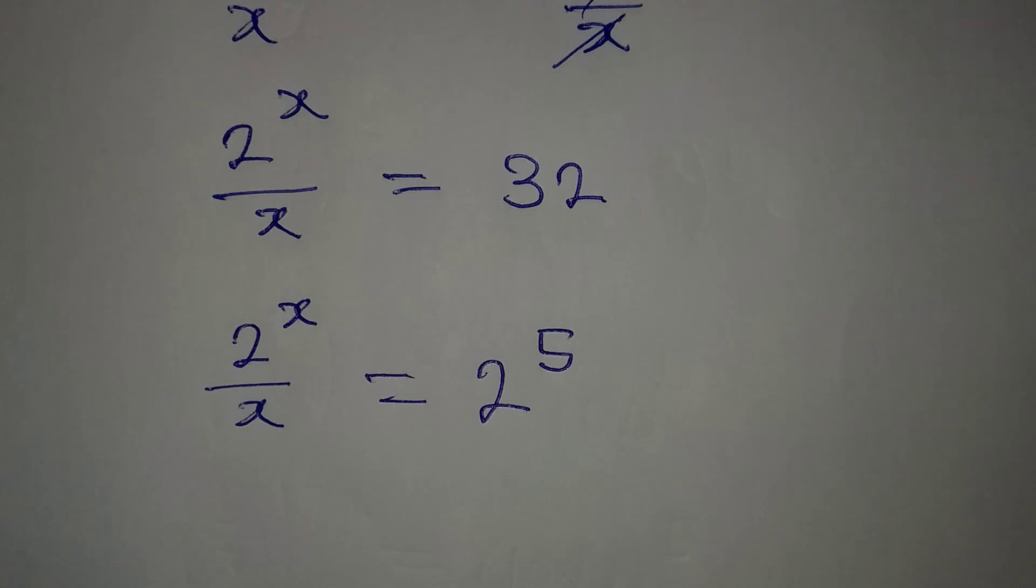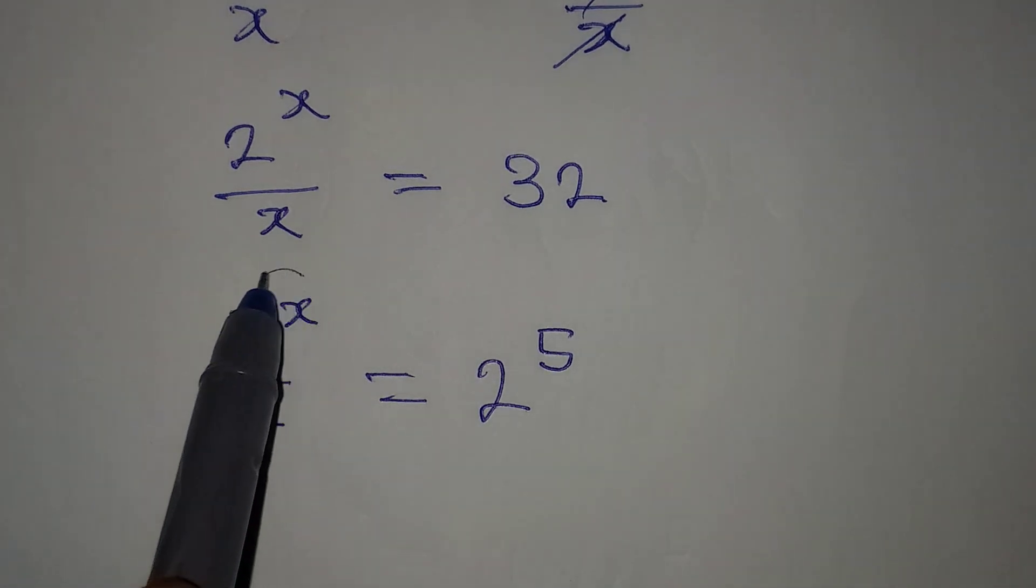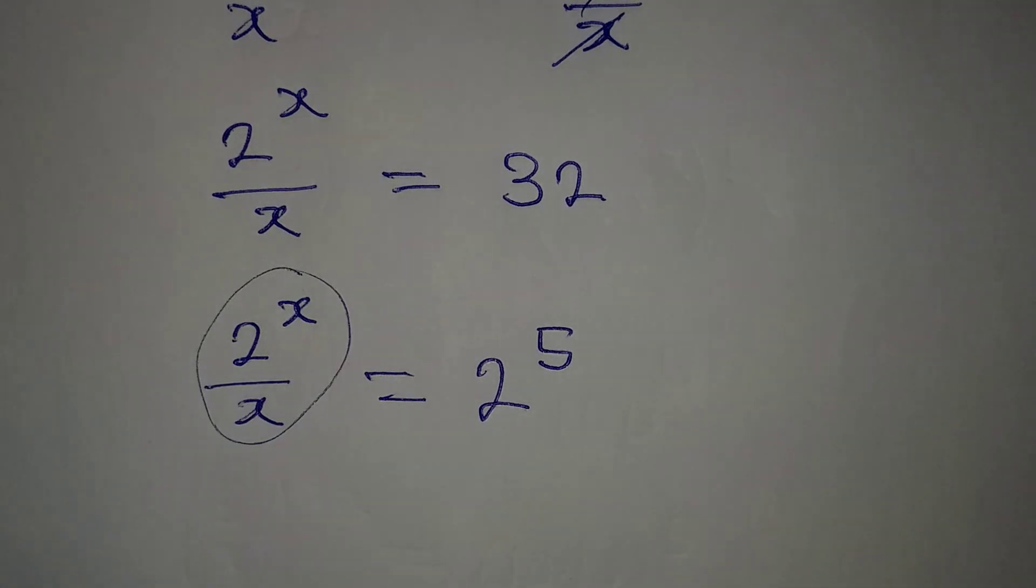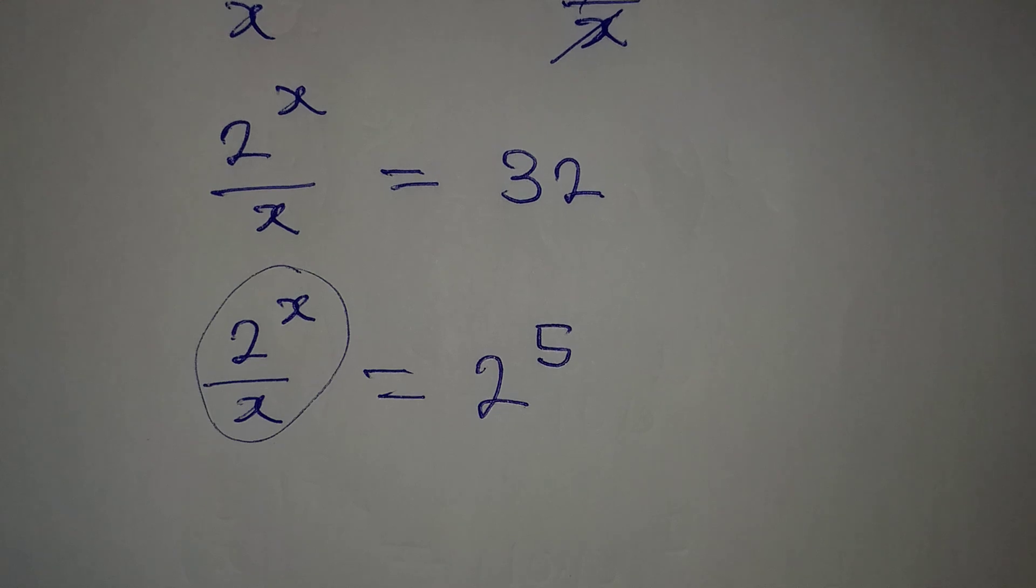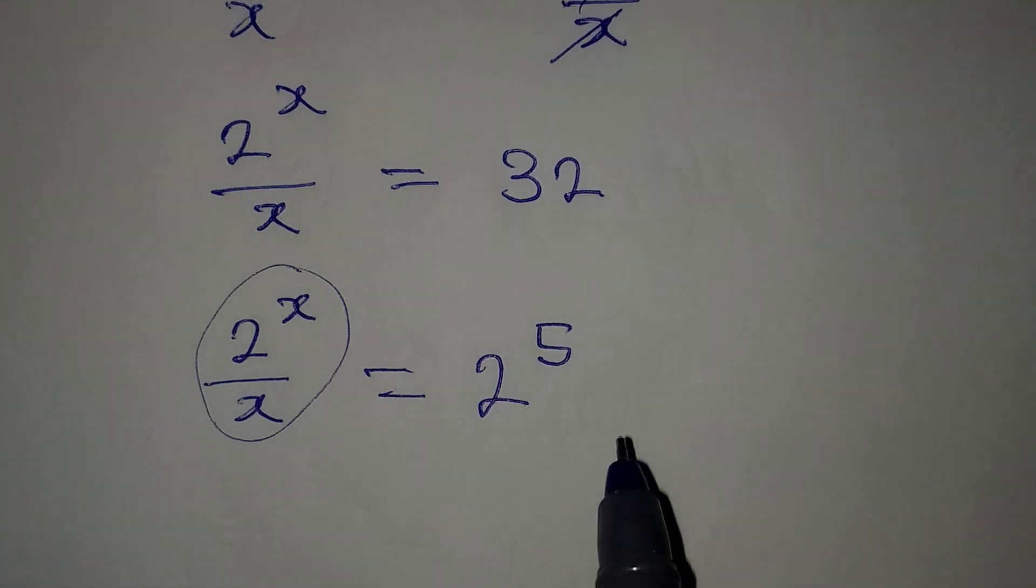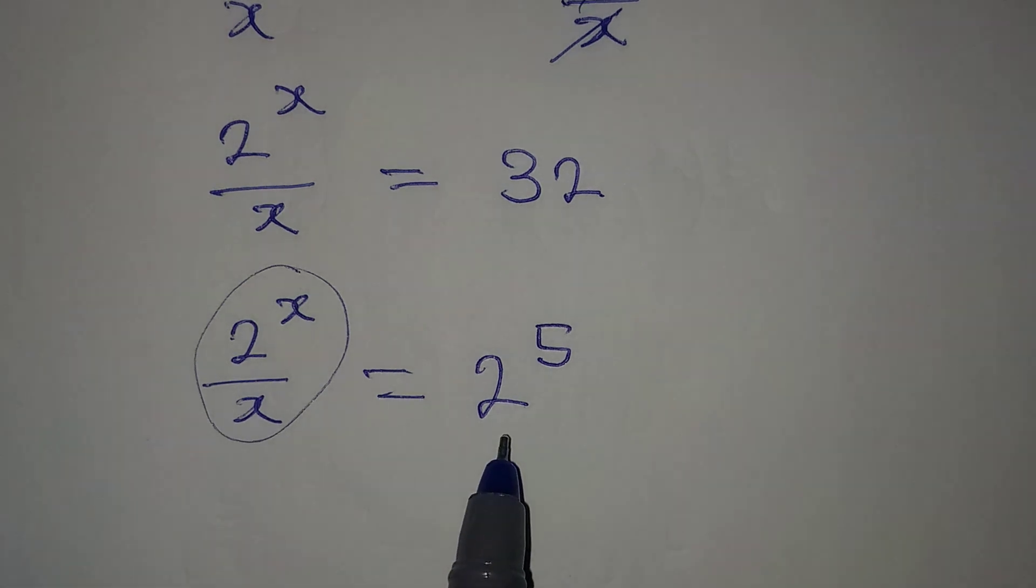So now, let's think of a number that we will use so that at the end of the day, we'll end up having something in this form. So the number, if I use 5, it will not work. I have to use 8, because 8 can be written in a way that it will have 2 as the base.